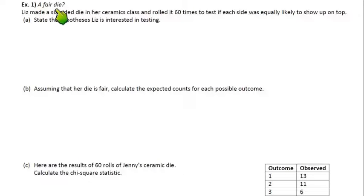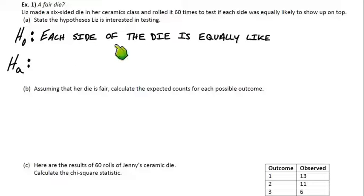Let's talk about the first example. It says, a fair die. Or is it? Hence the question mark. Liz made a six-sided die in her ceramics class and rolled it 60 times to test if each side was equally likely to show up on top. Or was her die kind of a piece of junk and one side showed up more often or less often than the other sides? We'll just see how good Liz is with ceramics. So let's state these hypotheses that Liz is interested in testing. The null and the alternative. So the null would say, everything's the same. Everything's all good. Everything's fair throughout. So in context, the null hypothesis would say, each side of the die is equally likely. In other words, it's a fair die.